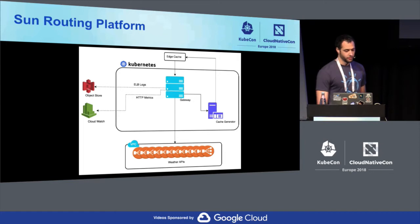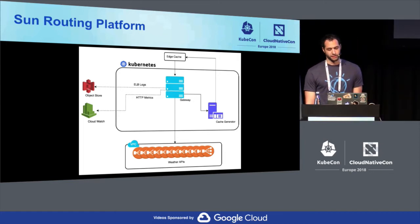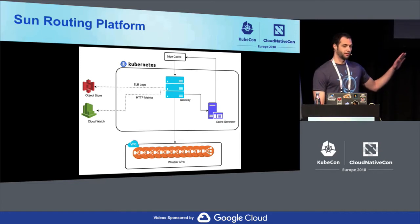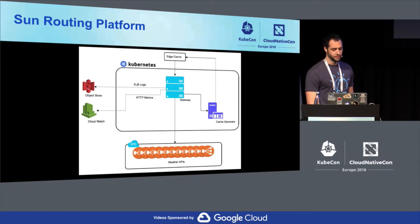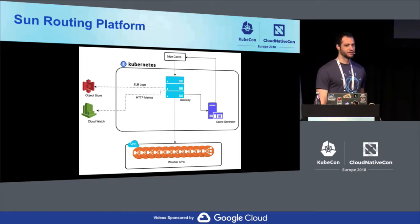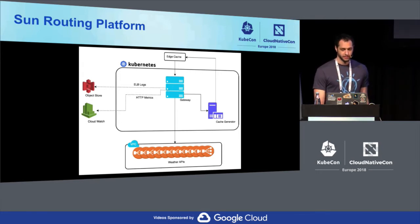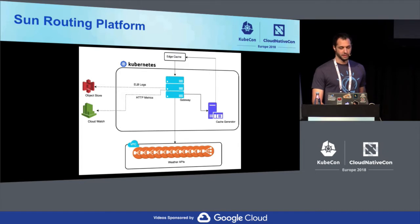We log our access logs to an object store and our HTTP metrics are pumped to CloudWatch. Our gateway is running in Kubernetes — we're pretty early adopters of Kubernetes on our team. But 95% of the weather APIs do not exist in Kubernetes within our mesh; they are in VPCs and load balanced. So a big challenge when we were looking for tooling was how do we route outside of our mesh.